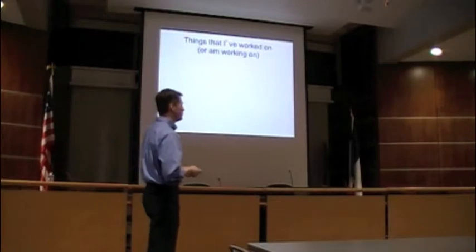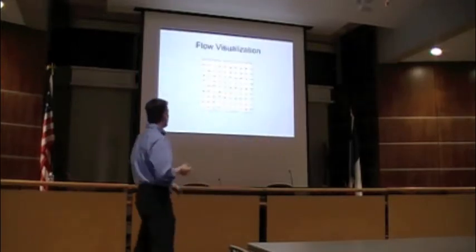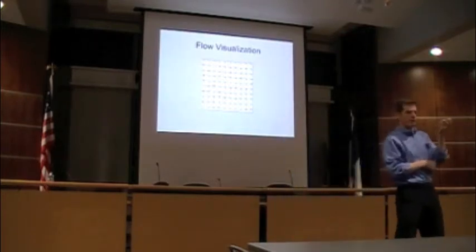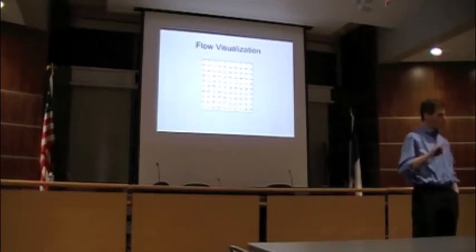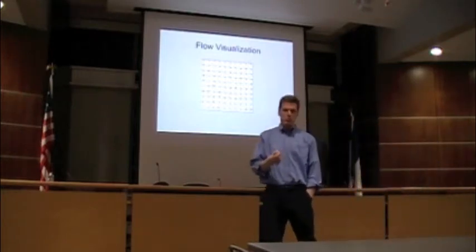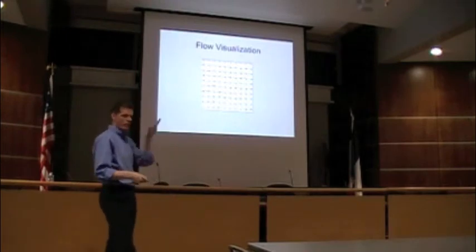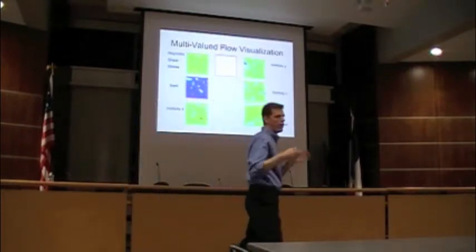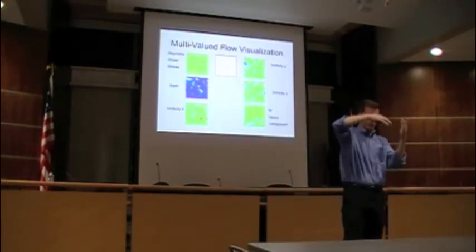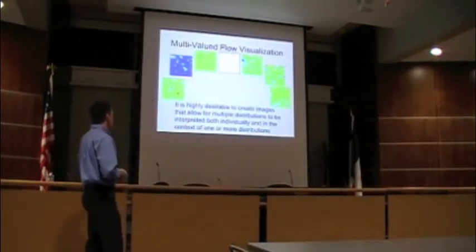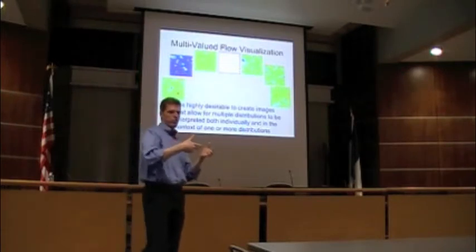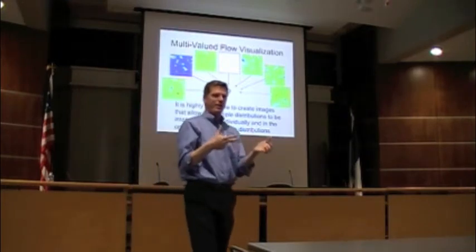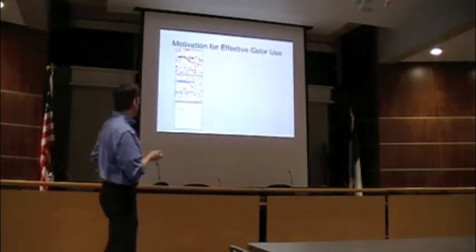My dissertation — the work I created to get my PhD — was on flow visualization. We were trying to determine how to effectively visualize variables related to turbulent flow to better understand why turbulence occurs. It's a really complicated problem. We have lots of different variables to visualize simultaneously: the flow of wind over an airplane wing, Reynolds shear stress, swirl, vorticity components, and out-of-plane vector components. It's highly desirable to create images that allow all those distributions to be visualized at the same time and in context.